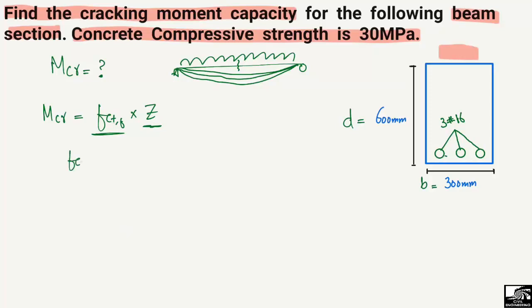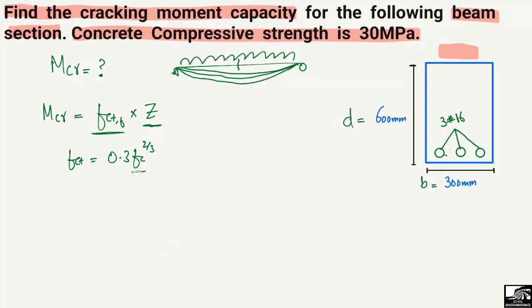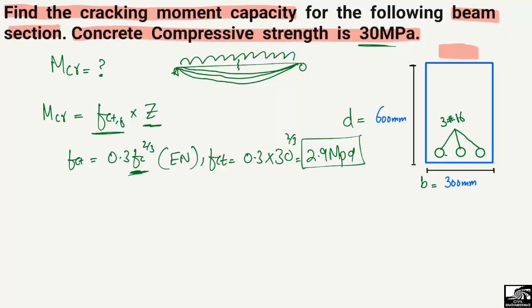We need two values: concrete tensile strength and section modulus. From Eurocode, the concrete tensile strength formula is 0.3 × (fck)^(2/3). This formula is specific to European standards; Indian, Australian, and American standards have different formulas. Using this formula with fck = 30 MPa, the concrete tensile strength comes out to be 2.9 MPa.